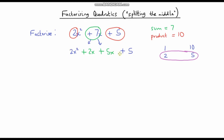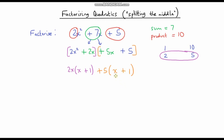Now I can break down this whole expression into two separate parts. Concentrating on the part in purple, I can factorise it by factoring out a 2x, leaving x plus 1 in my brackets — since 2x times x is 2x squared and 2x times 1 is 2x. Then focusing on the second part, I can take out a common factor of positive 5, leaving x plus 1 in my brackets — since 5 times x is 5x and 5 times 1 is 5.